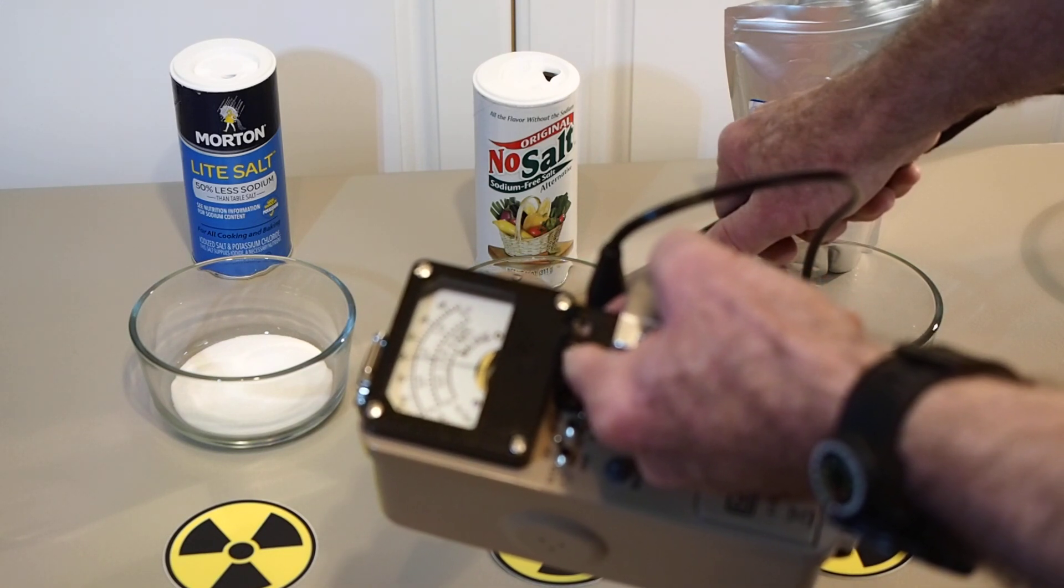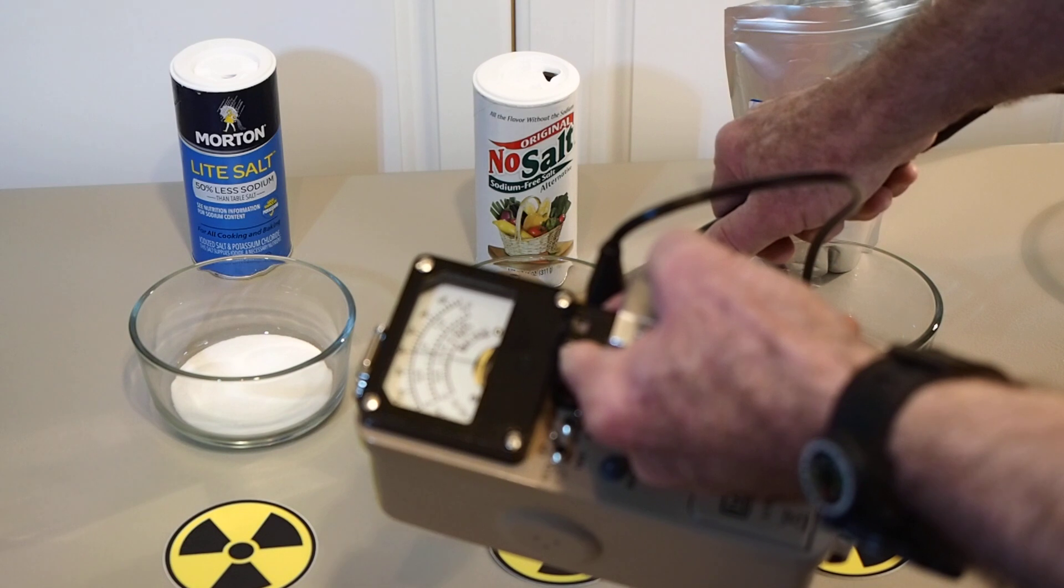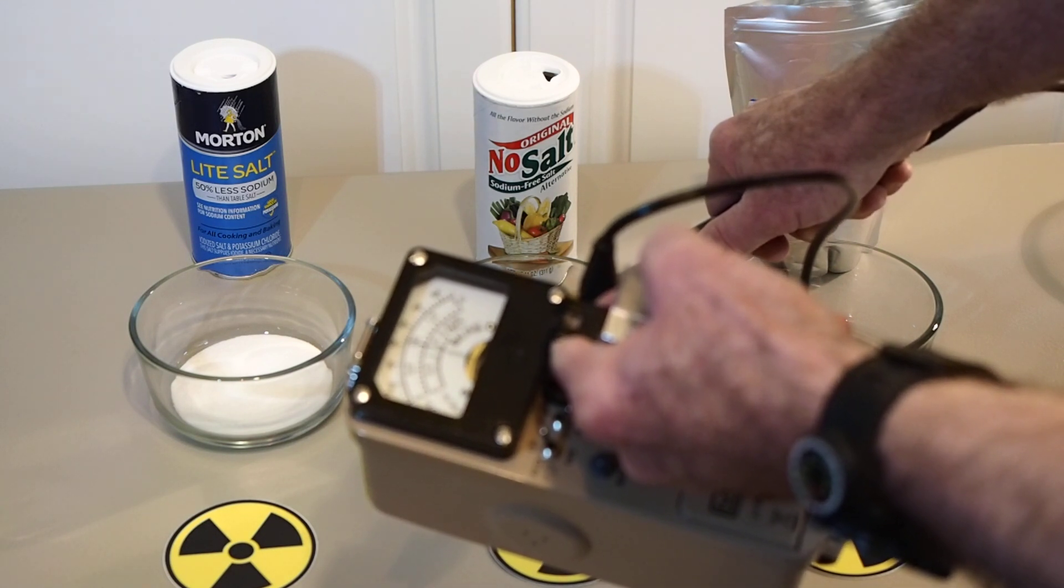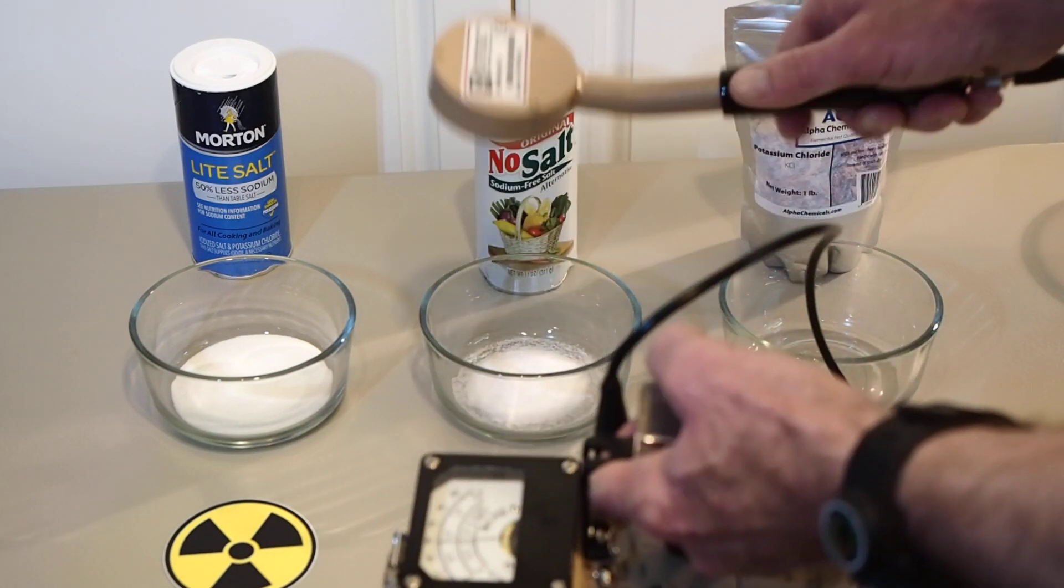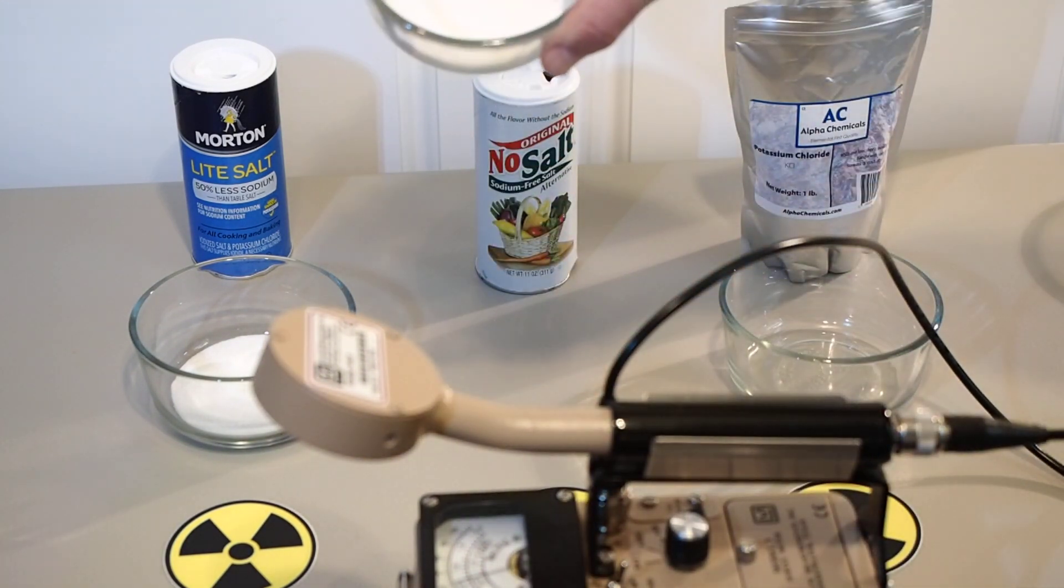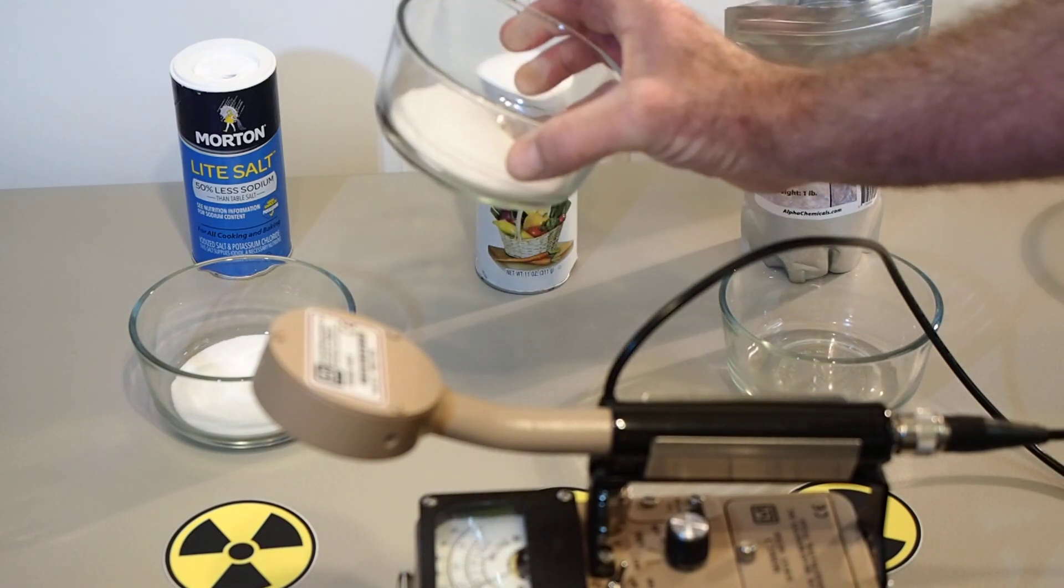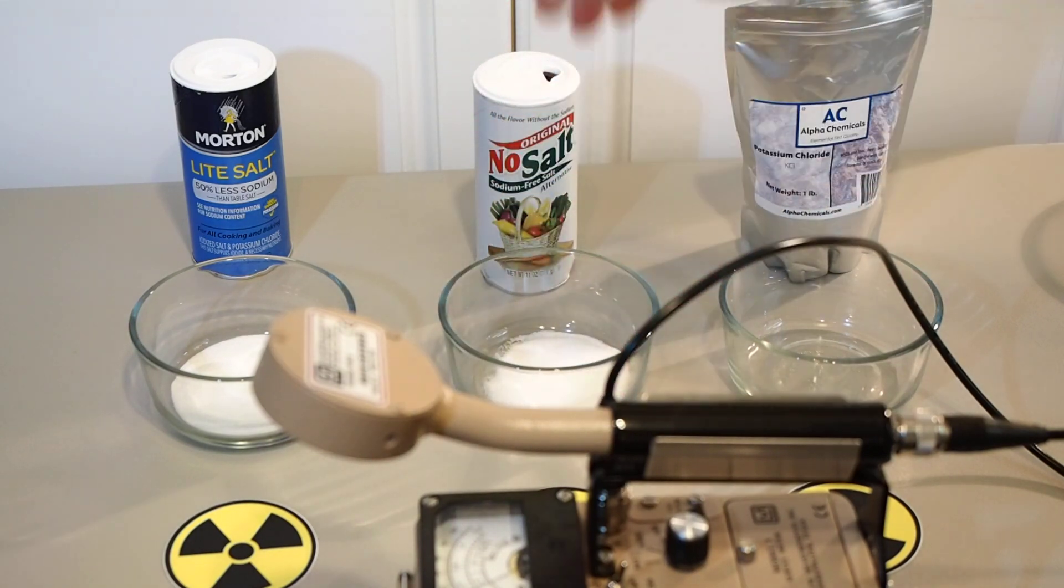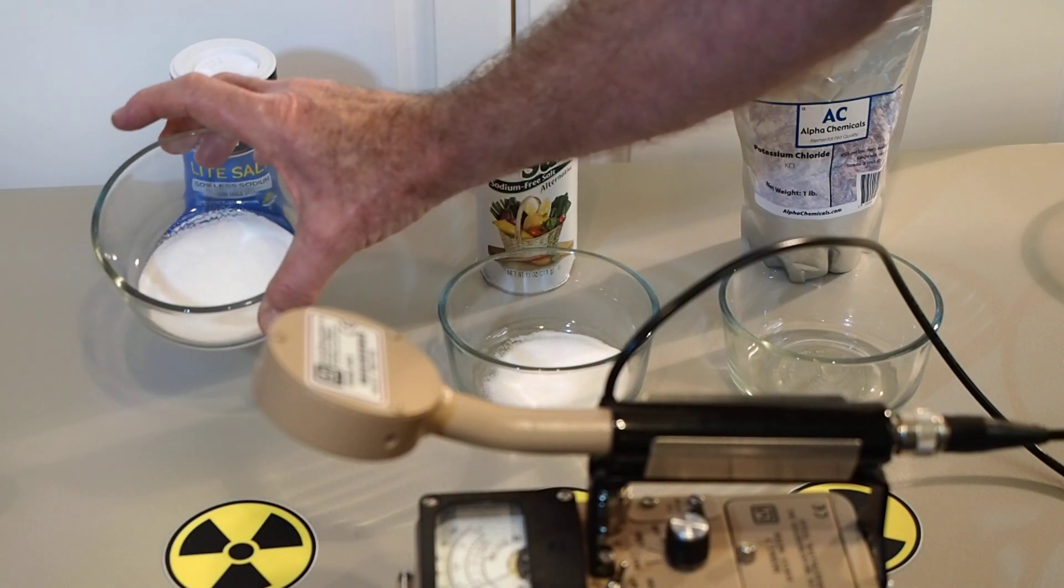Okay, well, we're going a little bit over 300 counts per minute. It seems to be maybe 320 counts per minute. So definitely higher than the Morton light salt. So at 320 counts per minute and subtracting the 40 from the background, we have a reading from this amount of no salt of about 280 counts per minute. So definitely higher than the 200 counts per minute that we got with the light salt, and then subtracting the 40 background, we had about 160.